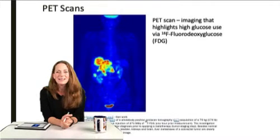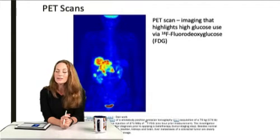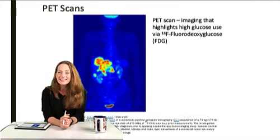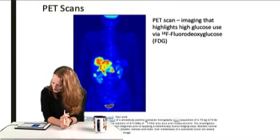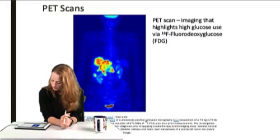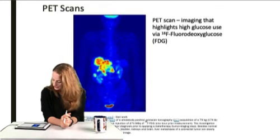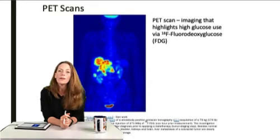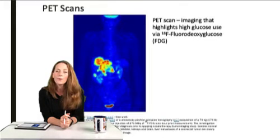This is an image of a PET scan — imaging that highlights high glucose use through 18-FDG. What you can see here is a whole body PET scan of a female after IV injection. The investigation was performed as part of tumor diagnosis. You can see the normal accumulation in high glucose sites: tracers in the heart, bladder, kidneys, and brain. But you can also see a huge accumulation in the liver and the colon — this image shows a liver metastasis of a colorectal tumor.